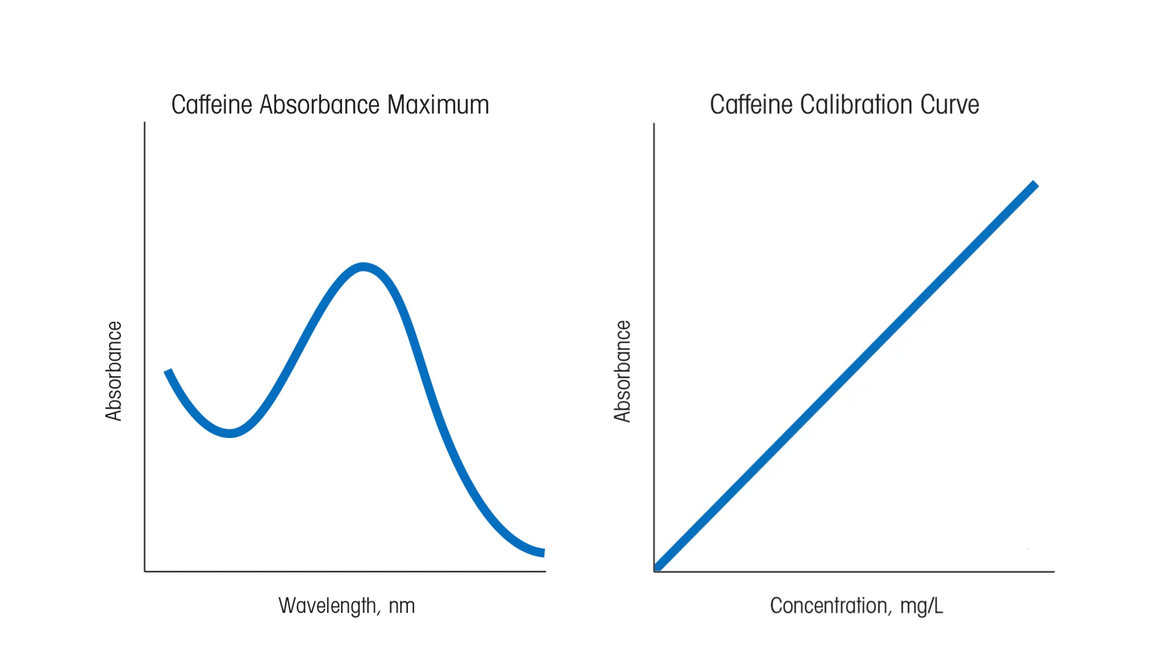Using the pre-programmed calibration curve, which shows absorbance at a particular wavelength against concentration, when we know the amount of light absorbed by the sample at that wavelength, we can determine the concentration. Brilliant!